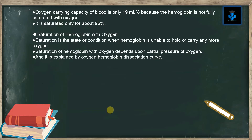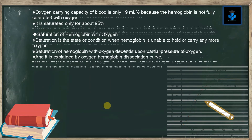This is because hemoglobin is not fully saturated with oxygen — it is saturated only to about 95%. Saturation of hemoglobin with oxygen is the state when hemoglobin is unable to hold or carry any more oxygen. Saturation of hemoglobin with oxygen depends upon the partial pressure of oxygen, and this is explained by the oxygen-hemoglobin dissociation curve.